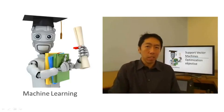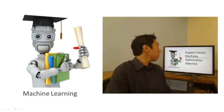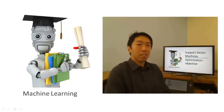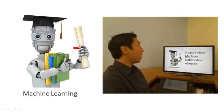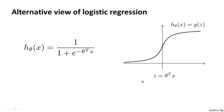As with our development of other learning algorithms, we're going to start by talking about the optimization objective. In order to describe the support vector machine, I'm actually going to start with logistic regression and show how we can modify it a bit to get what is essentially the support vector machine.